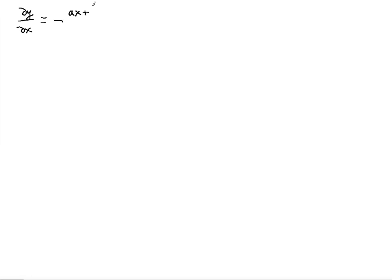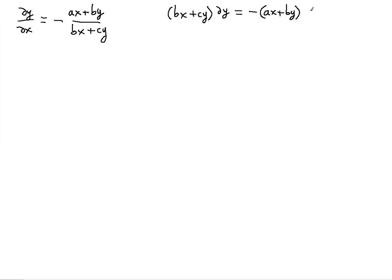We'd like to solve the differential equation dy/dx = -(ax + by) / (bx + cy). The first thing to note is that you need to cross multiply. Cross multiplying gives you (bx + cy)dy = -(ax + by)dx.